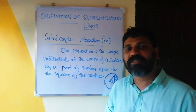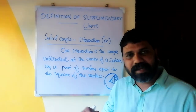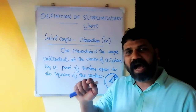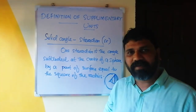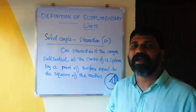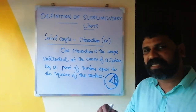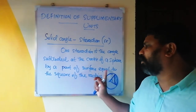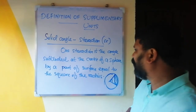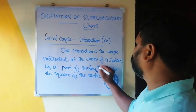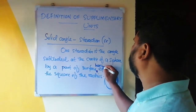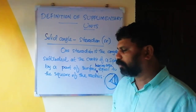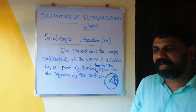One steradian is the angle subtended at the center of a sphere by a part of the surface having area equal to the square of the radius.